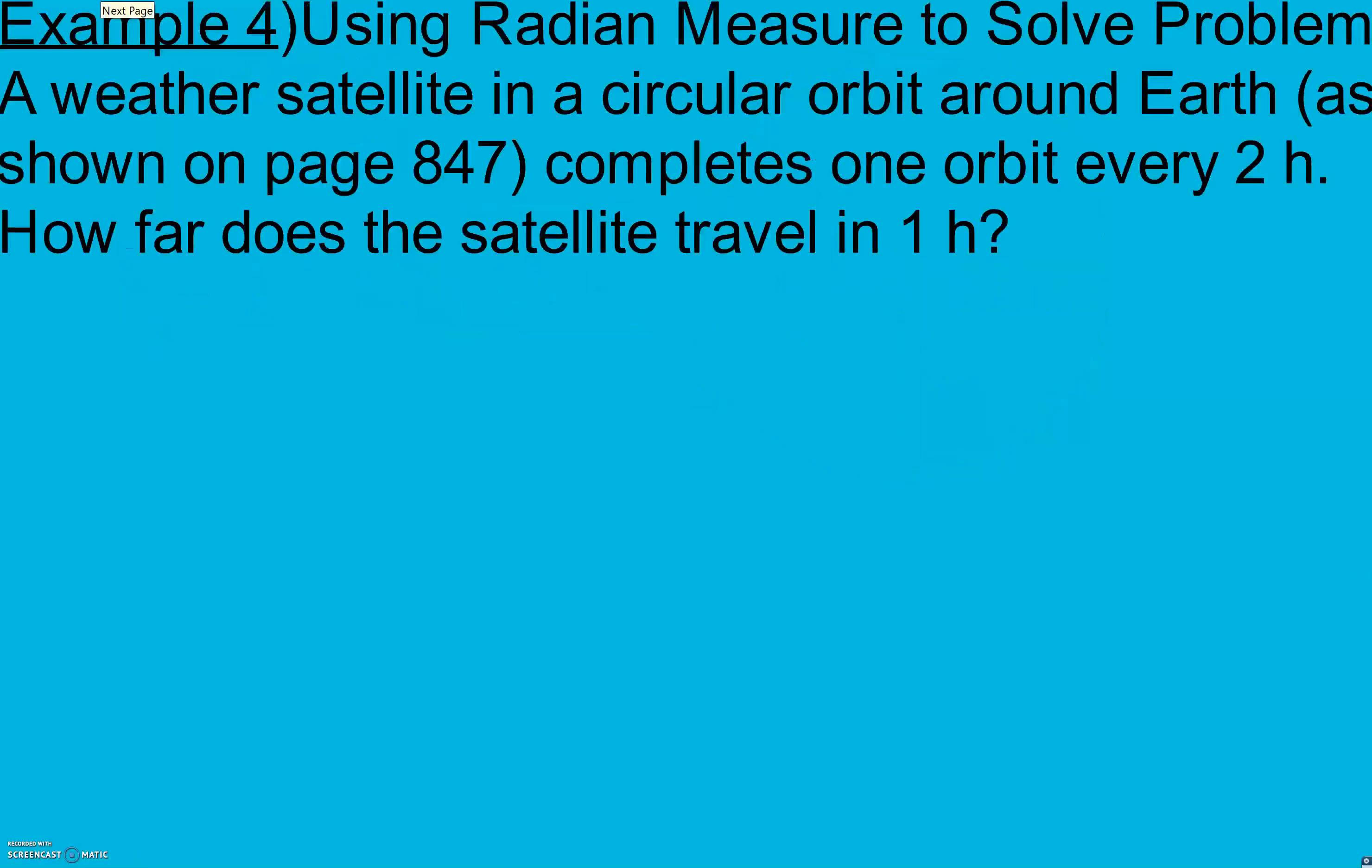Example 4 is using radian measure to solve problems. A weather satellite in a circular orbit around Earth, as shown on page 847 in your book, completes one orbit every two hours. How far does a satellite travel in one hour?